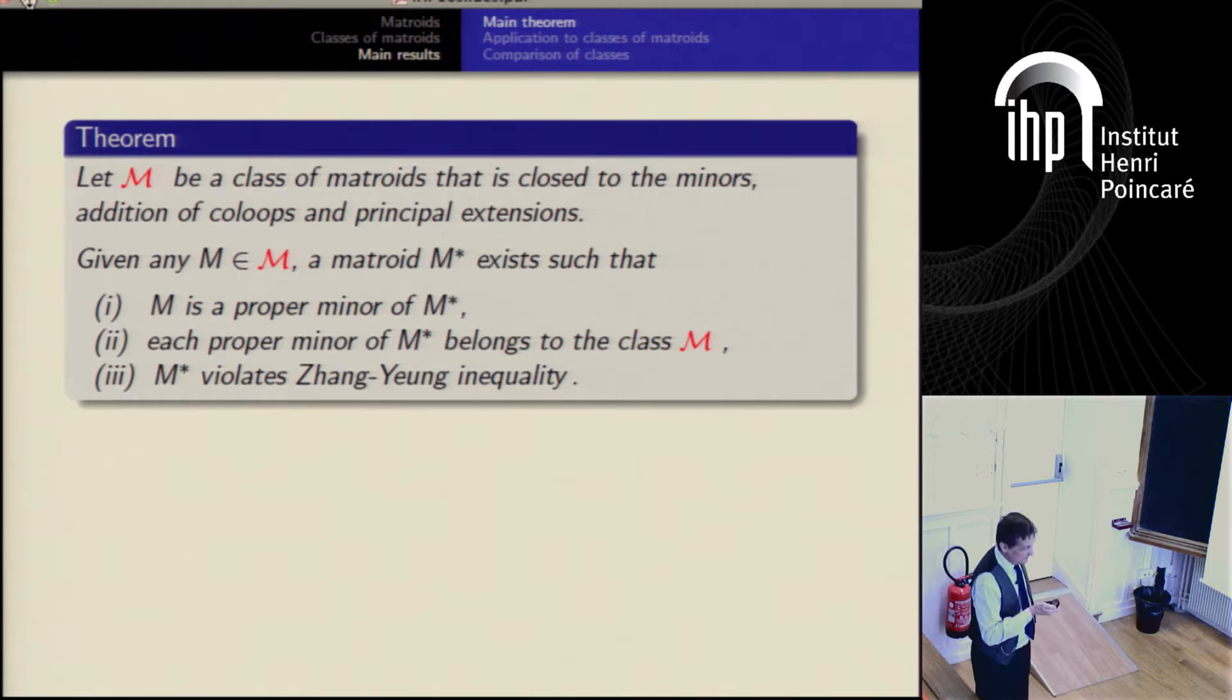But this is a general theorem, and it's- So M-star is not in the class? Yes. Yes. M-star usually has M-star in the class. Sorry? M-star usually has M-star in the class. M-star is not in the class. If the class satisfies Zhang-Yang inequality. If I added the assumption that the class satisfies Zhang-Yang inequality, then M-star is not in the class. So you cannot keep going.